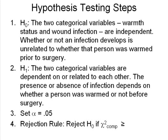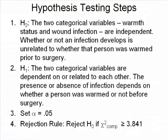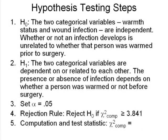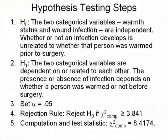Let's go back to our spreadsheet and see what our critical value would have to be. Our critical value is 3.841. So for step four, the rejection rule is: reject HO if chi-square computed is greater than or equal to 3.841. For step five, computation and test statistic: chi-square computed equals 8.4174, which is the value in the darkened black cell on our spreadsheet.